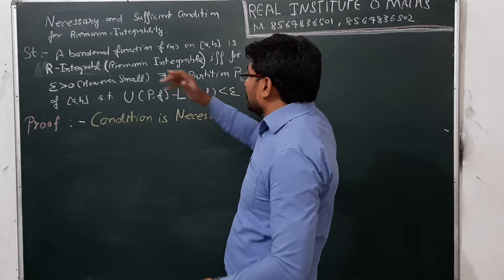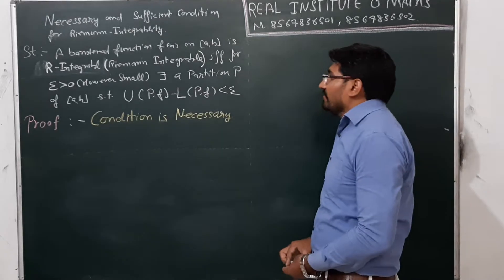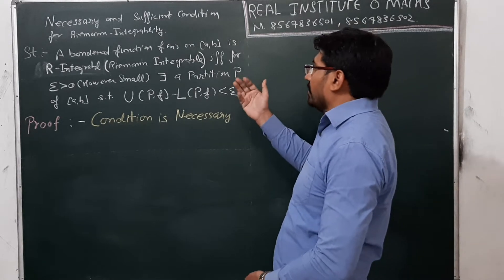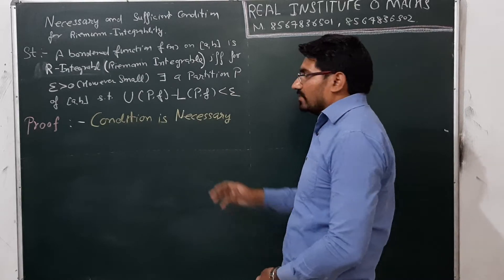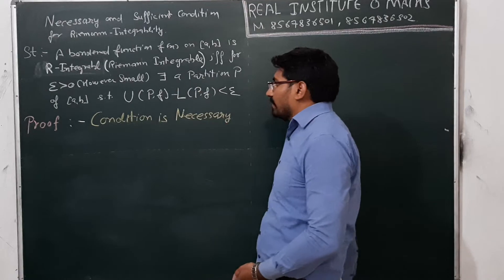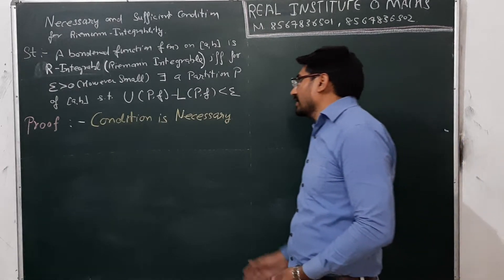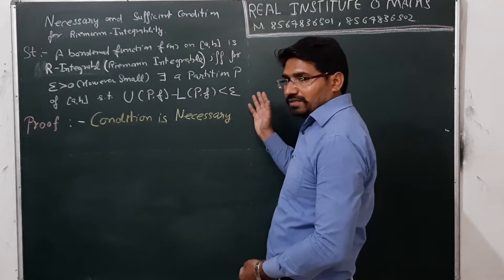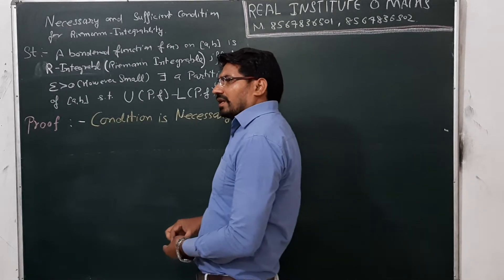What is the condition? The bounded function F of X on [A,B] is Riemann integrable if and only if for every epsilon greater than 0, however small, there exists a partition P of [A,B] such that U(P,F) minus L(P,F) is less than epsilon.